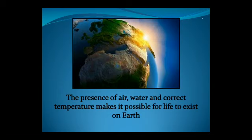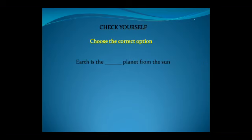Now children, let's check yourself. You have to choose the correct option. The first question is: Earth is the blank planet from the sun. Your options are First, Third, Fifth, or Seventh. So, what will be the correct answer? Yes, the correct answer is Third. Earth is the third planet from the sun.